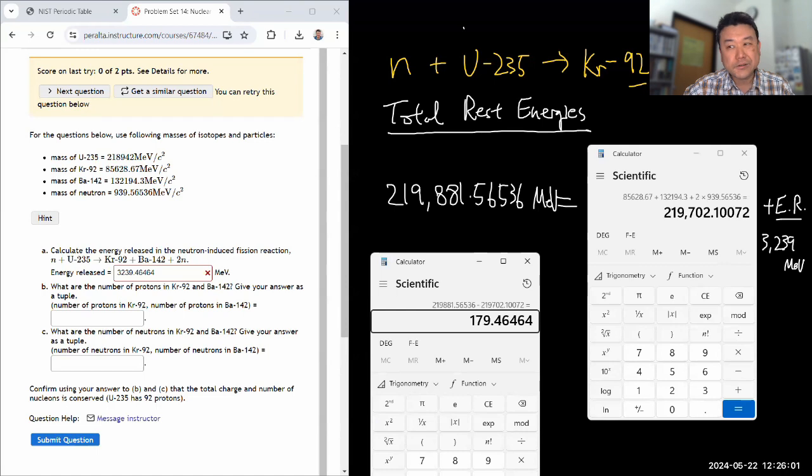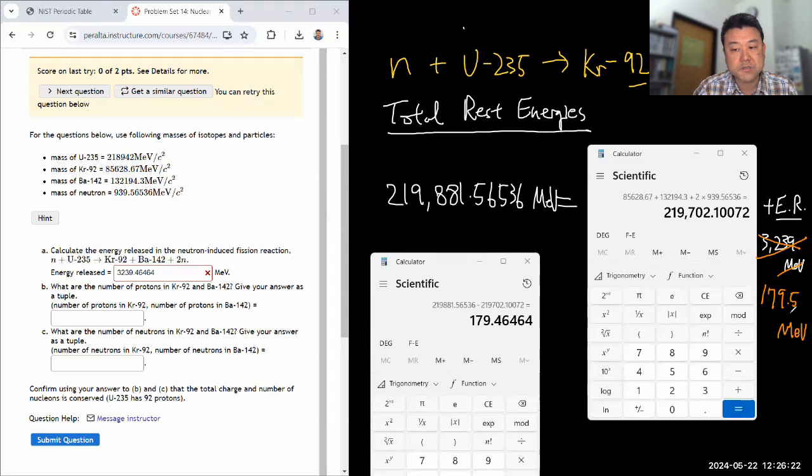So again, it doesn't actually matter because we haven't forgotten any electrons here. But if we had forgotten it, it'll still have been fine. Because in the size of 179.5 MeV, one or two electrons would be just adding 0.5 or subtracting 0.5 from this calculation. So 179.5 MeV. Yeah. So that should be correct. Good.